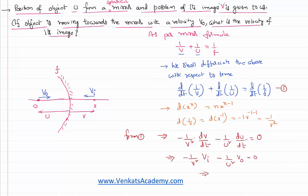So simplify this: minus v_i/v² equals minus v_o/u². This implies v_i equals minus (v/u)² times v_o. That is the equation for the velocity of the image when the velocity of the object is known for us.